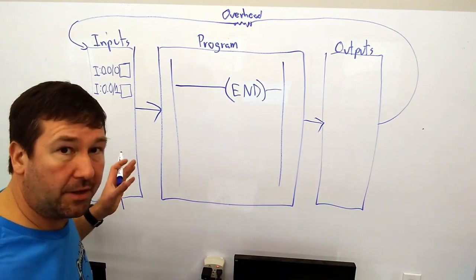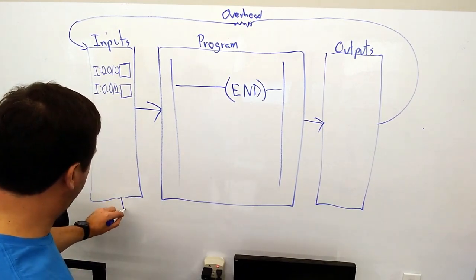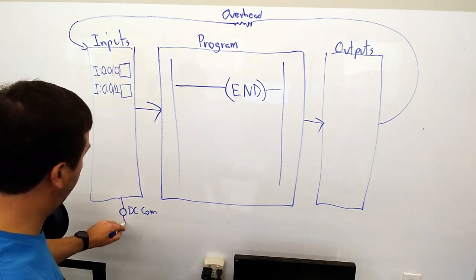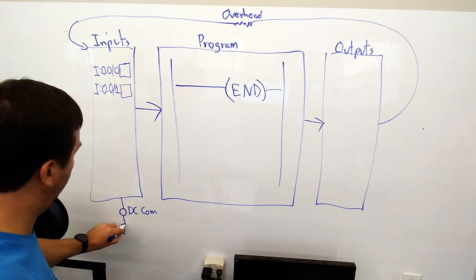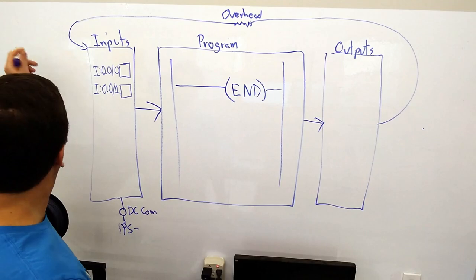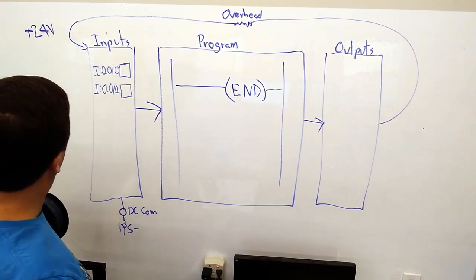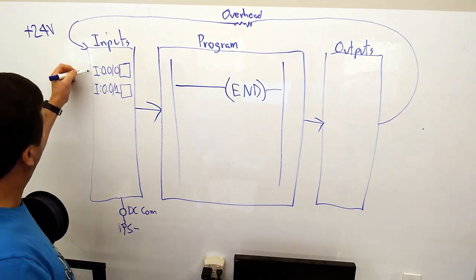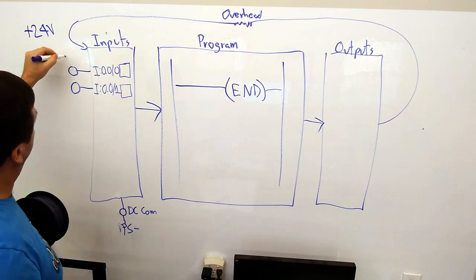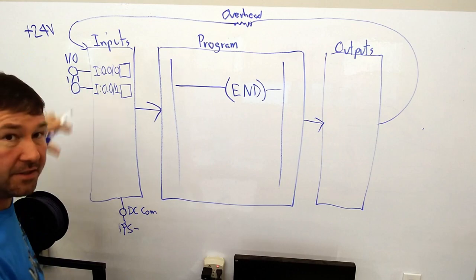Simplifying this a little bit, we have a 24-volt power supply out there. And here we have a terminal called DC-COM, and that is connected to our power supply minus. So going back to our original wiring diagram, up here we have our plus 24-volt. And we have terminals here, and this one says I/0, and the next one says I/1, and so forth.